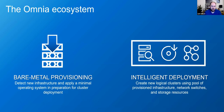The Omnia ecosystem is built on two independent components. The first is bare metal provisioning — we can detect new infrastructure and apply a minimal operating system configuration in preparation for cluster deployment. The second is the intelligent deployment part; you don't have to use bare metal provisioning to use this. The intelligent deployment creates new logical clusters using a pool of provisioned infrastructure, network switches, and storage resources. By having this pool of resources available, we can configure and deploy logical clusters running on top of it, which can be stood up very quickly.